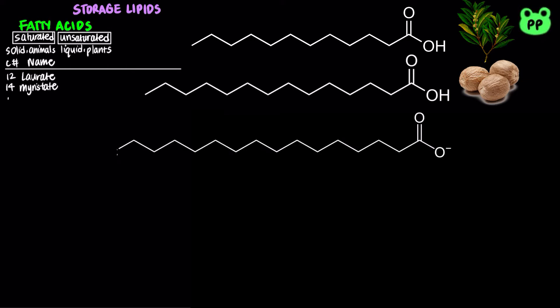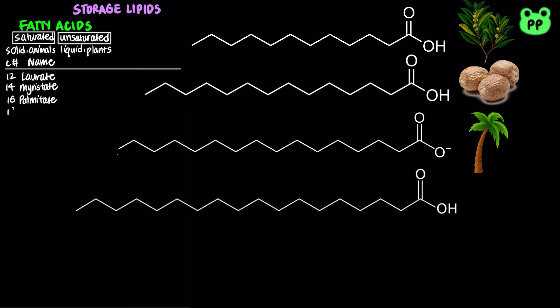A 16-carbon saturated fatty acid is known as palmitic acid, named after palm oils. Palmitic acid usually occurs as the palmitate anion at physiological pH of 7.4. Palmitate is the most common saturated fatty acid, present in butter, cheese, milk, and meat. A 18-carbon saturated fatty acid is known as stearic acid, which is the second most common saturated fatty acid, abundant in animal fat.